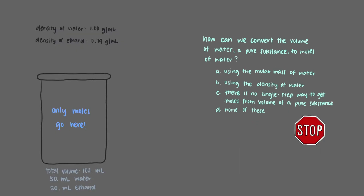How can we convert the volume of water, a pure substance, to moles of water? There isn't a single-step way to do this, but all hope is not lost. We know how to convert mass to moles, but we don't have mass. That's why your lab instructor gave you a key piece of information — the density of water. Density is given in grams per milliliter, so it's our key to converting from volume to mass and then to moles.